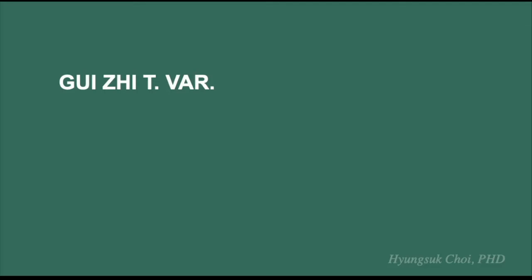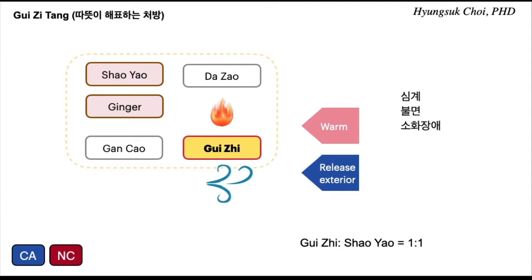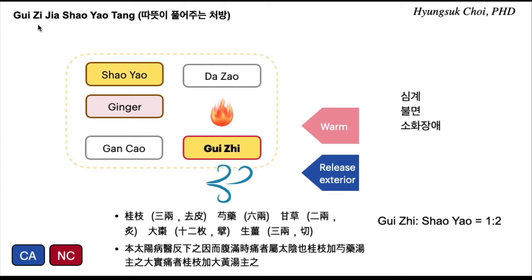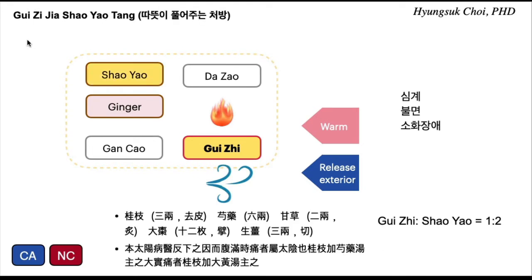These are the variations from gui-ji-tang. This is gui-ji-tang — everybody knows gui-ji-tang. And this is gui-ji-jia-xiao-yao-tang. What is the difference between those two formulas?